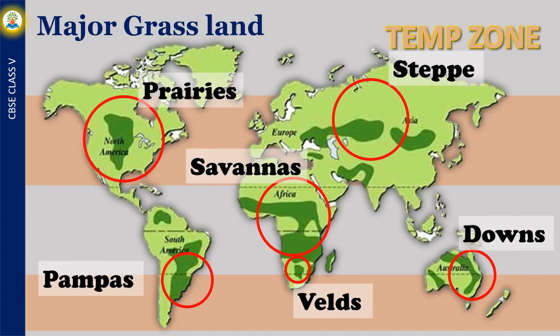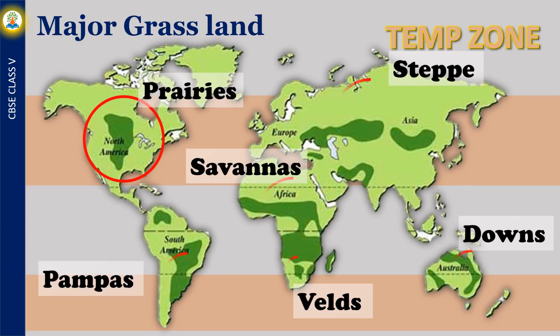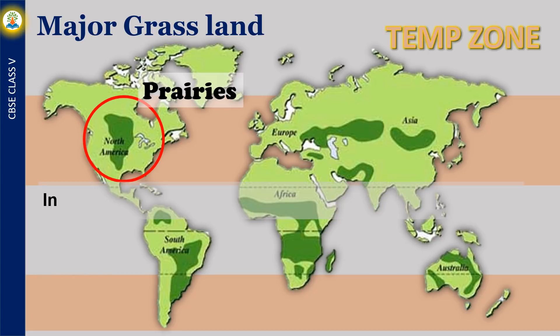The major grasslands of the world are as follows: the prairies in North America, the pampas in South America, the steppes in Russia, the velds in South Africa, the savannas in Central Africa, and the downs in Australia. In this lesson, we will learn about the prairies of North America.